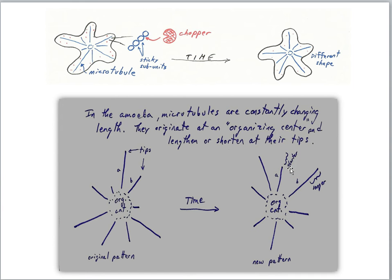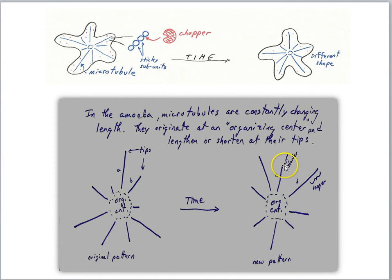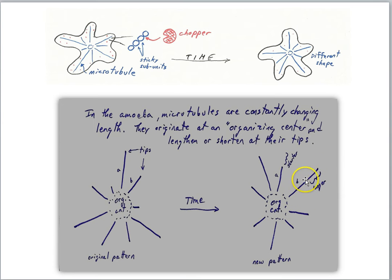So far, these two competing processes generate changes in the overall shape of the amoeba as these proteins interact. For example, microtubule A is long here but in time it's a little shorter — evidently some choppers were chopping at its tips — while microtubule B got longer, because spontaneous assembly happened and no choppers happened to bump into its end.